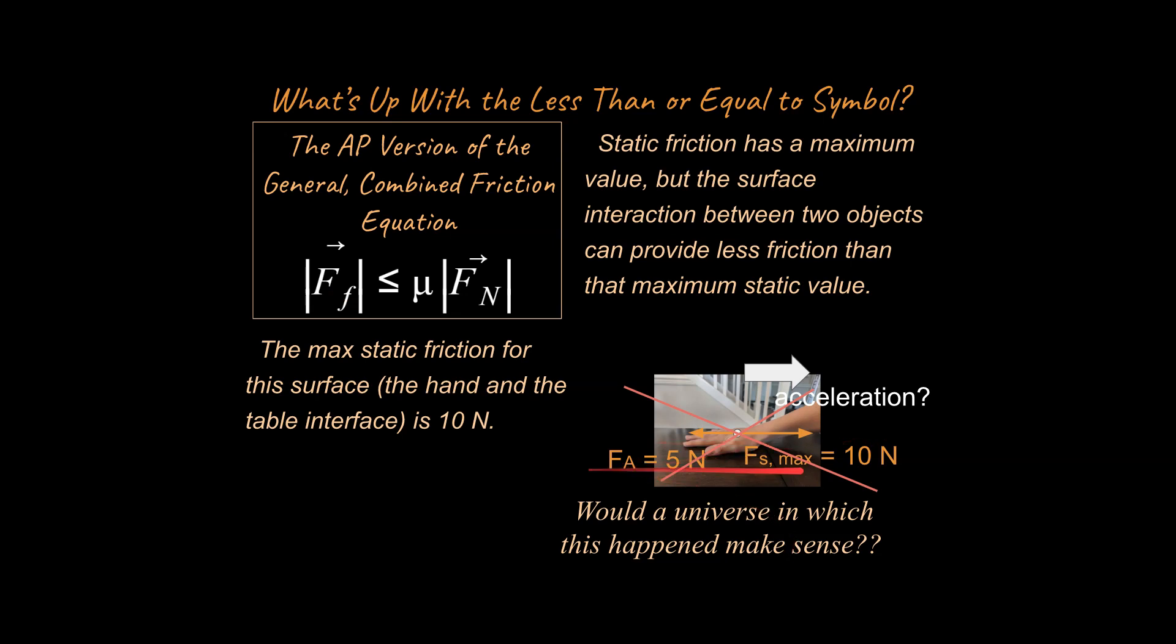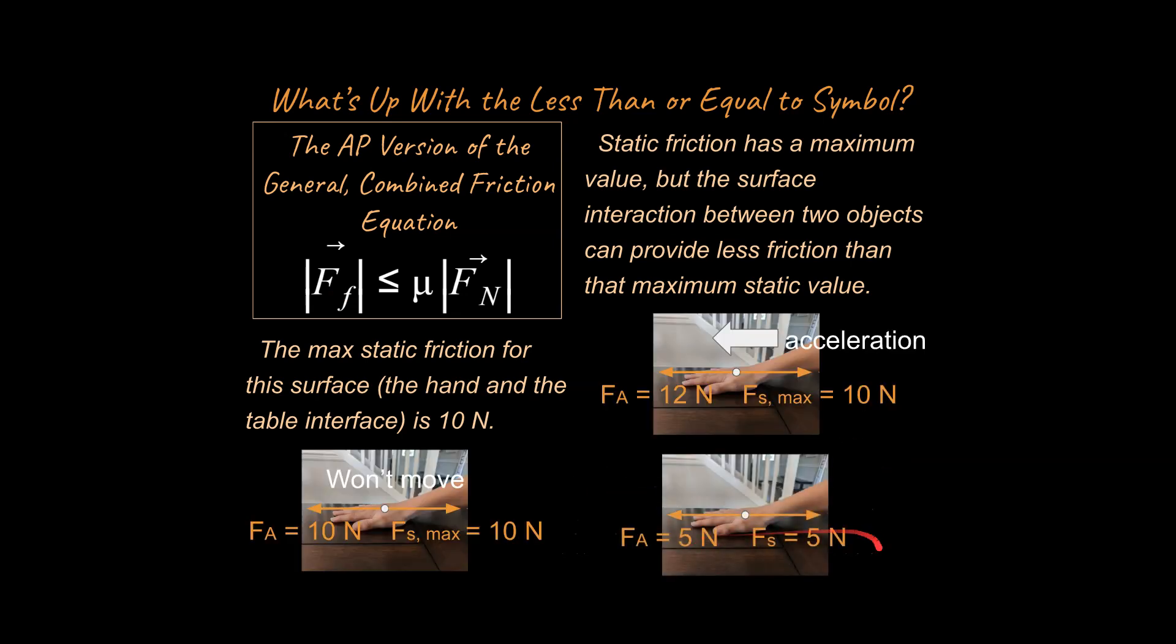In other words, we would not get a scenario like this, but we could get a scenario like this even if our Fs was a maximum 10. If our forward force was only 5 newtons, our backwards force would only be up to that 5 newtons. It wouldn't be greater than that.